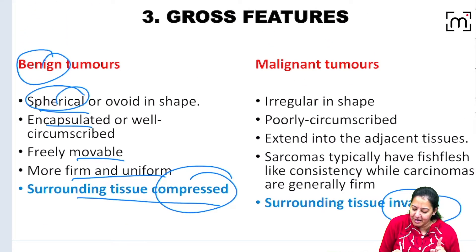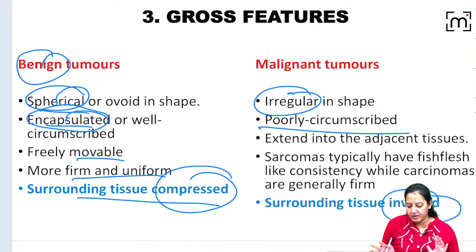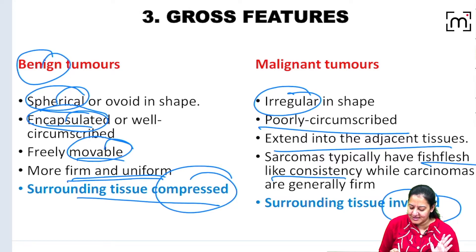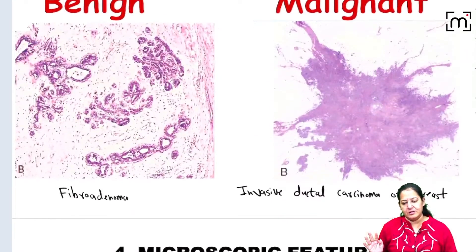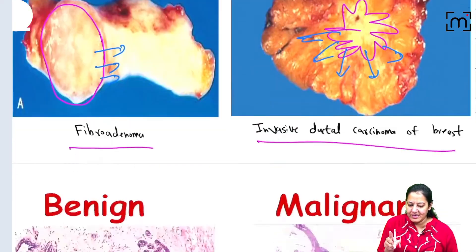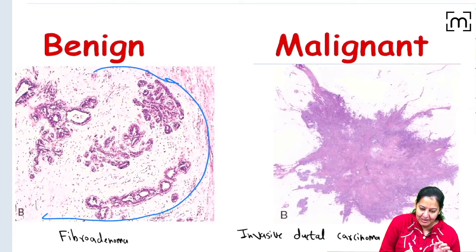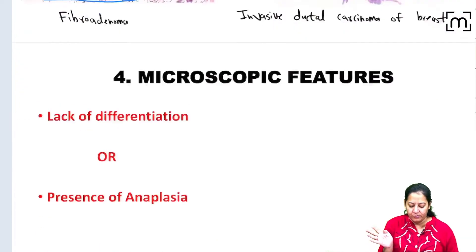So to summarise gross findings: benign tumours are spherical, encapsulated, movable, firm, and uniform — they compress surrounding tissue. Malignant tumours are irregular, poorly circumscribed, non-encapsulated, and fixed — they invade surrounding tissue. On microscopy also, benign tumours are well circumscribed with visible boundaries, while malignant tumours are infiltrating everywhere with no fixed boundary.